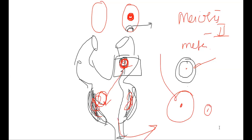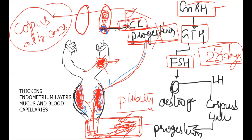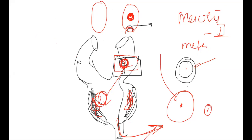When fertilization occurs there is no menstruation — no release of endometrium layers. The corpus luteum remains for about two to three months more. After that, the placenta takes over. If fertilization occurs, the zygote forms and the thickened endometrium layers along with blood capillaries remain to provide nourishment to the developing embryo.